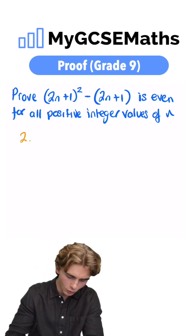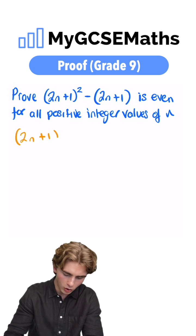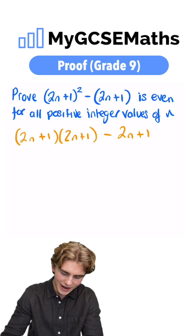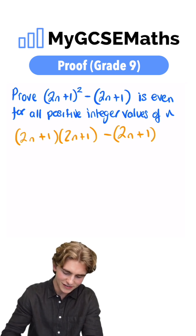We have 2n plus 1 squared, which is 2n plus 1 times by 2n plus 1, and then we're subtracting 2n plus 1. Let's expand these brackets and see what we get.